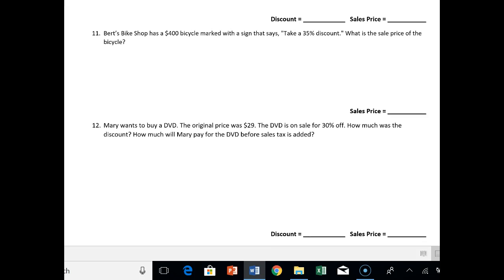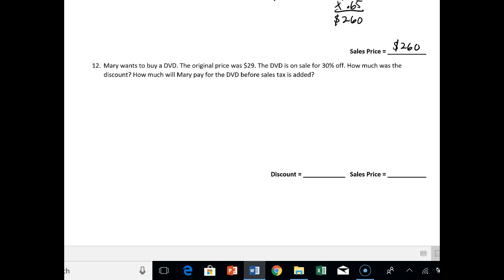At number 11, it says Bert's bike has a $400 bicycle marked that says take 35% discount. What is the sale price of the bicycle? So it only wants the sale price, so you don't have to find exactly what the discount is worth. So again, I'm not paying 100% of the price. I'm paying 100 minus 35, which is 65% of the price. So it's 400 times 0.65. I get $260. It makes sense. 65% should be a little bit more than half of 400. Half of 400 is 200. So given that we have 260, we know we're a little bit more than half.